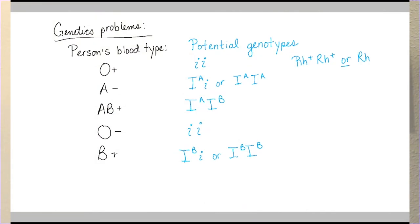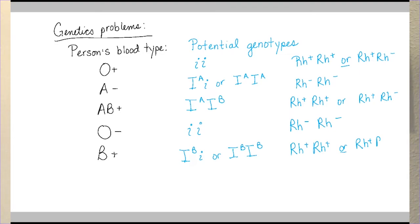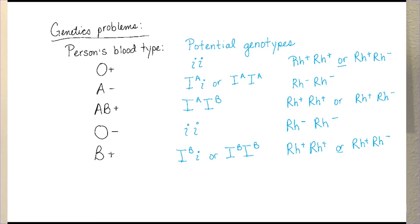For the Rh factor, it's a similar strategy. If you have at least one copy of Rh positive, then you make that positive antigen and you are considered positive type blood — O positive, A positive, AB positive, or B positive. Your other allele could be negative or another positive. Hopefully this is review from general biology; let's take a quick detour into the realm of genetics.